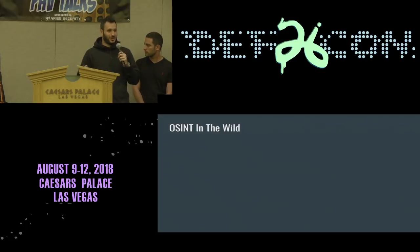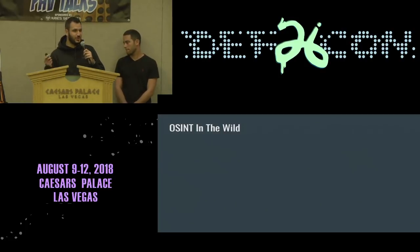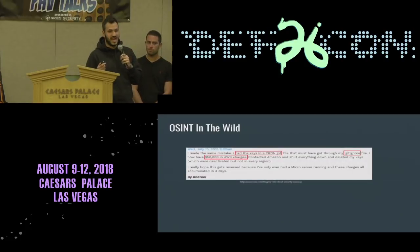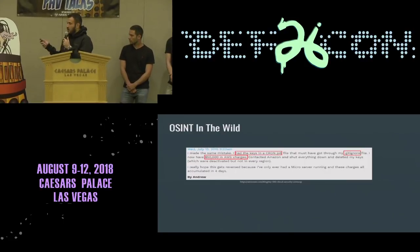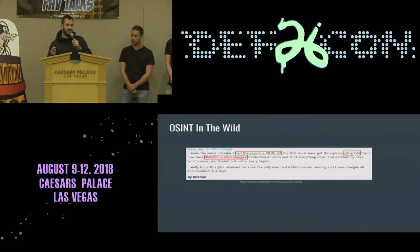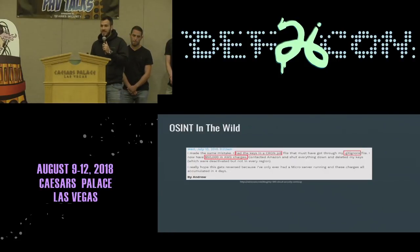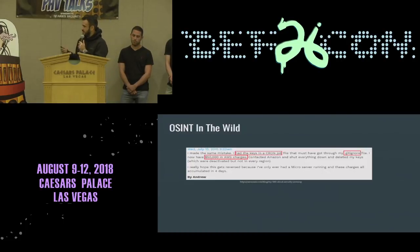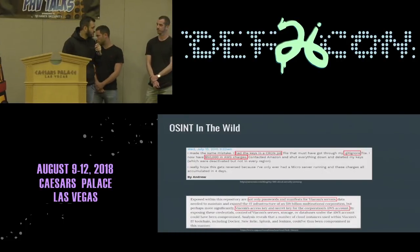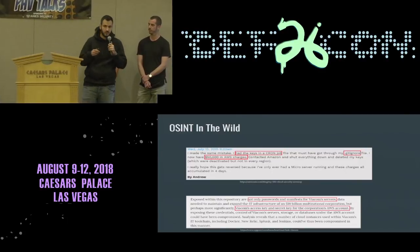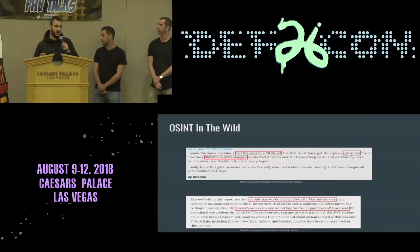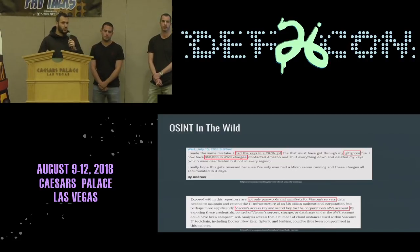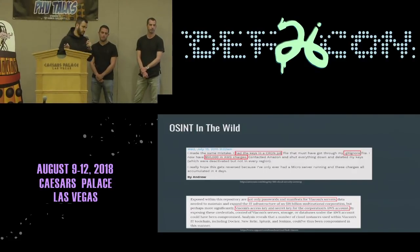OSINT really works in real life. We spent two minutes on Googling and found two awesome examples. The first: a guy posted a comment on a blog mentioning he lost fifty thousand dollars in AWS charges because he accidentally pushed his credentials to his public GitHub account, and attackers found it. The second example: the guys at UpGuard did research and found that Viacom had a lot of confidential data on their S3 buckets. OSINT works — attackers use it all the time and it's easy for them to leverage it.